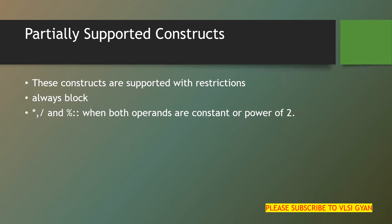The second type is partially supported constructs — those supported with certain restrictions. For example, the always block is synthesizable if you use a sensitivity list. For a combinational circuit, if you mention all the inputs in the sensitivity list, it is synthesizable. For a sequential circuit, if in the sensitivity list you define edge-triggered — positive edge or negative edge of the clock — it is synthesizable. Avoid using combinational loops in the always block, as they may lead to race conditions and are not synthesizable. Non-blocking assignments should be used for sequential circuits in the always block.